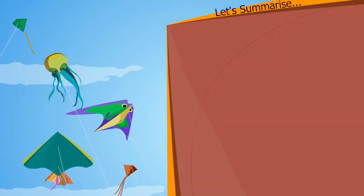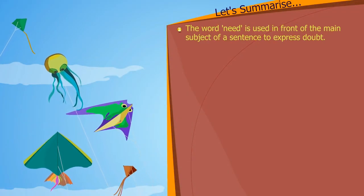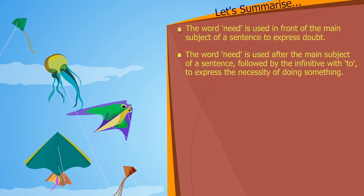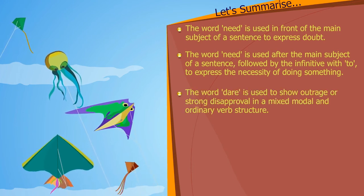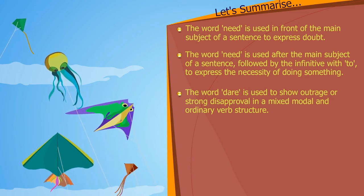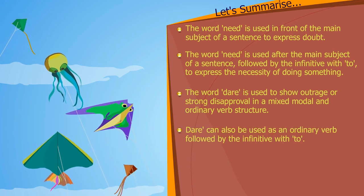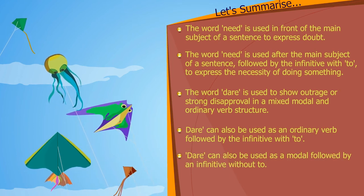Let us summarize. The word need is used in front of the main subject of a sentence to express doubt. The word need is used after the main subject of a sentence, followed by the infinitive with to, to express the necessity of doing something. The word dare is used to show outrage or strong disapproval in a mixed modal and ordinary verb structure. Dare can also be used as an ordinary verb, followed by the infinitive with to. Dare can also be used as a modal, followed by an infinitive without to.